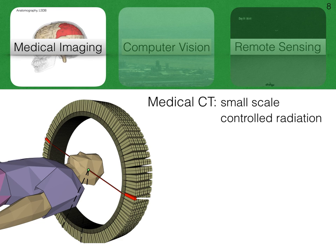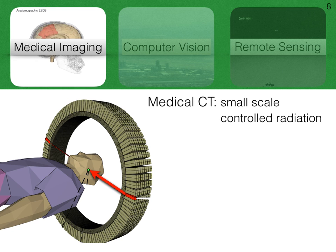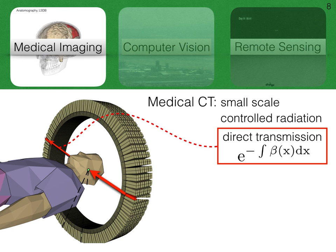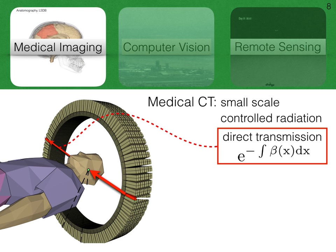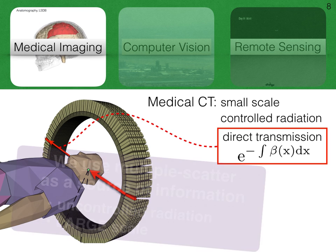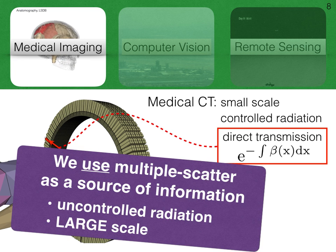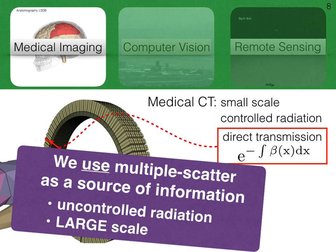In medical CT, small scale and controlled radiation enable a simple direct transmission model, which is an exponential decay with beta. But where does this energy go? Some of it may get scattered into different directions. We, on the other hand, use this multiply scattered signal to recover the volume. We don't control the radiation, and we do it on a large scale.